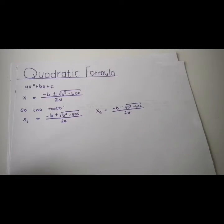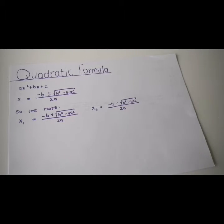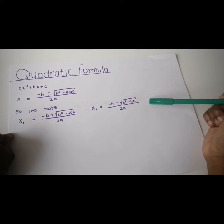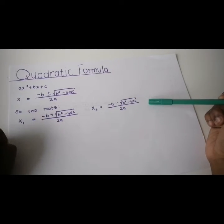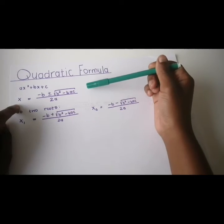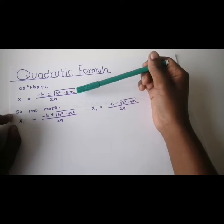Now let's move on to the quadratic formula. Sometimes completing the square becomes long, tedious, and the numbers get all over the place. So someone sat down and thought of a formula — the quadratic formula. All you need is for your equation to be in the form ax squared plus bx plus c, and then you can use the quadratic formula: x equals negative b plus or minus the square root of b squared minus 4ac, all divided by 2a.